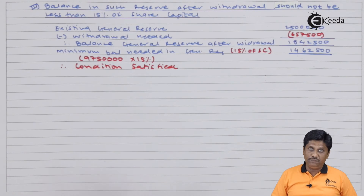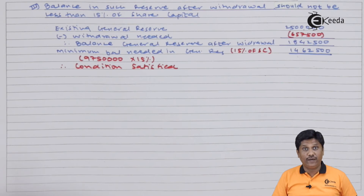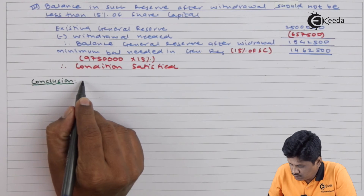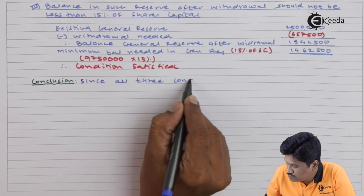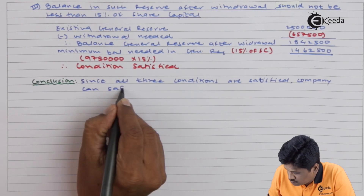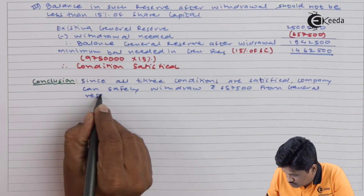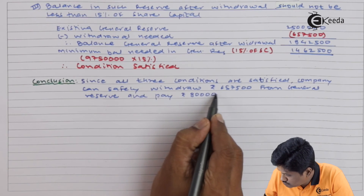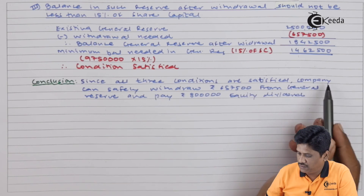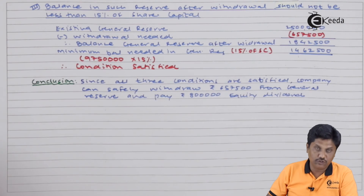In this way we have satisfied all three conditions. पहला condition था average dividend वो satisfy किया, दूसरा condition maximum 10% withdrawal वो भी किया, और तीसरा भी condition satisfied हुआ है. Conclusion: since all three conditions are satisfied, company can safely withdraw ₹6,500 from general reserve and pay ₹8 lakh equity dividend.